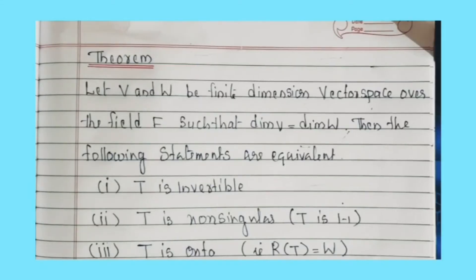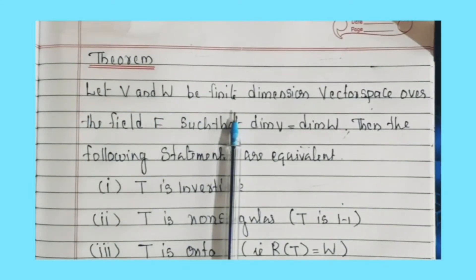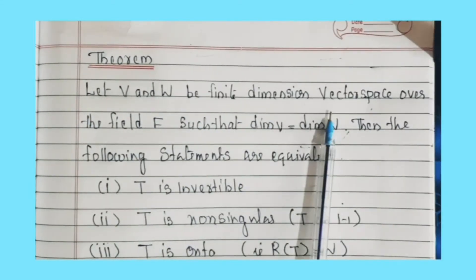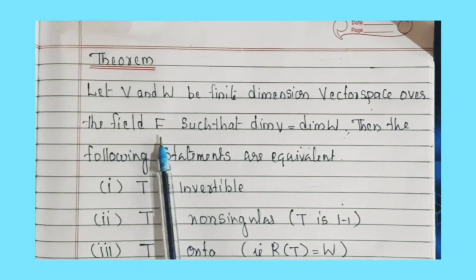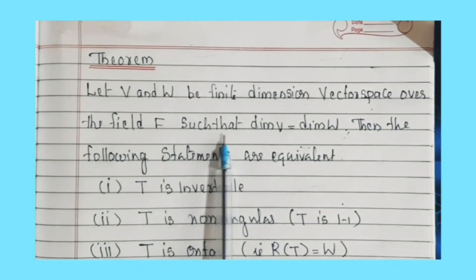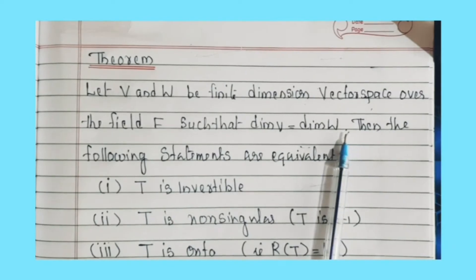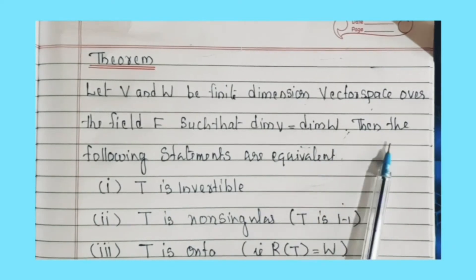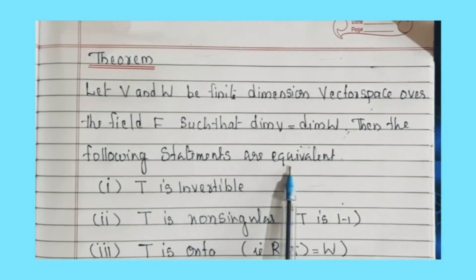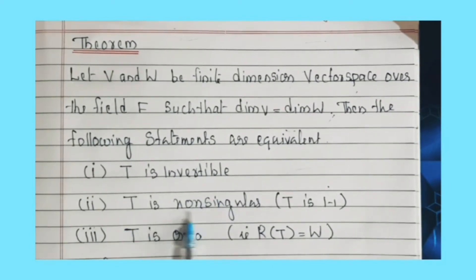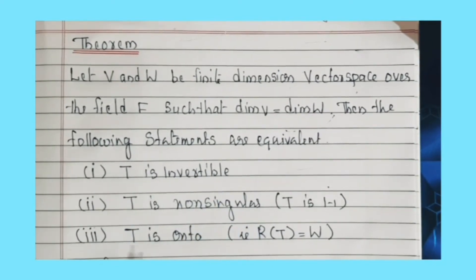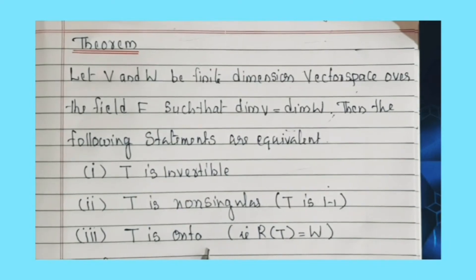Next theorem: Let V and W be finite dimensional vector spaces over the field F such that dimension of V equals dimension of W. Then the following statements are equivalent: first, T is invertible; second, T is non-singular; third, T is onto.